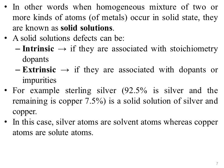Examples: Sterling silver — 92.5% is silver and the remaining 7.5% is copper. It is a solid solution of silver and copper. In this case, silver atoms are solvent atoms whereas copper atoms are solute atoms. Another example is brass — a solid solution of copper (64%) and zinc (36%). In this case, copper atoms are solvent atoms whereas zinc atoms are solute atoms.